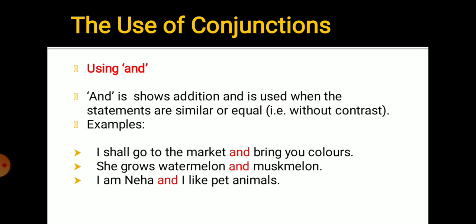Like: I shall go to the market, I shall bring you colors. Two things are connected with me, so I'm using conjunction and: I shall go to the market and bring you colors. She grows watermelon and musk melon - both are related with growing. I am Neha and I like pet animals. So we use and when two statements are similar, talking about similar things.